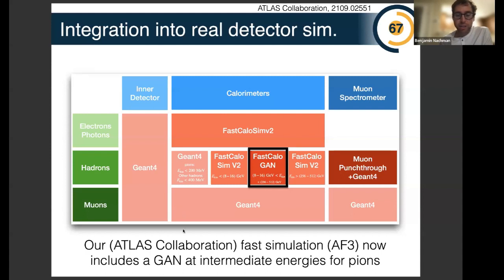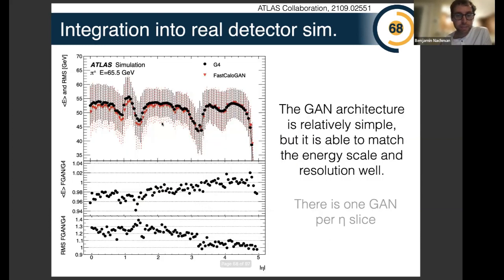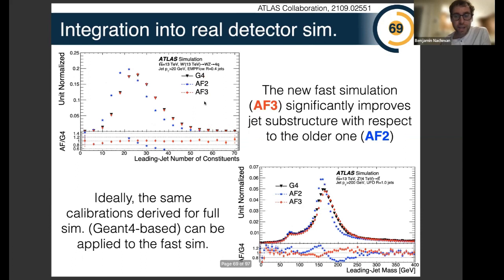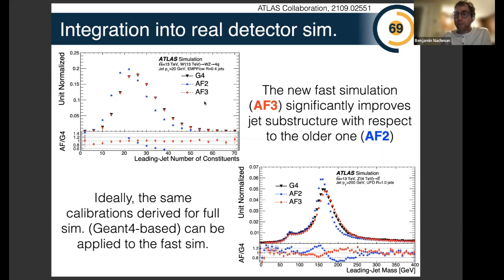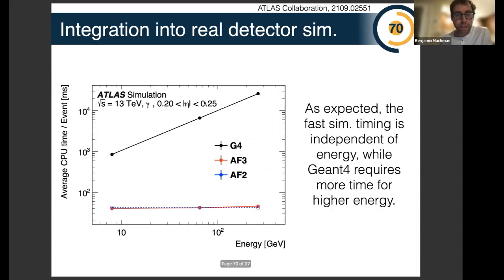It's not just something studied in principle — in practice it's starting to be used. Here's the schematic of the ATLAS experiment detector simulation: different subsystems on top, different particles on the right. For intermediate-energy pions in the calorimeter, a GAN is being used to generate something like a billion showers in the next round of simulations. This shows it works pretty well: the average energy as a function of pseudorapidity is well reproduced, and AF3 — the new version that uses this GAN — improves jet constituent multiplicity and jet mass performance compared to the old version. It's also fast: evaluating the neural network is flat as a function of energy, whereas GEANT4 takes longer at higher energies.